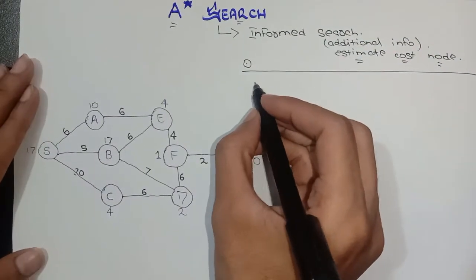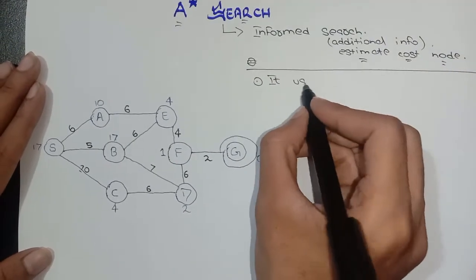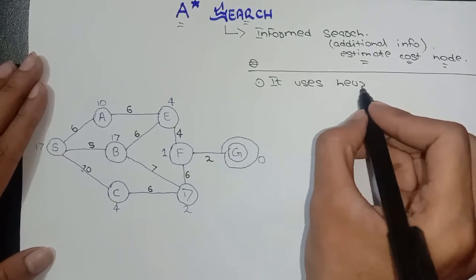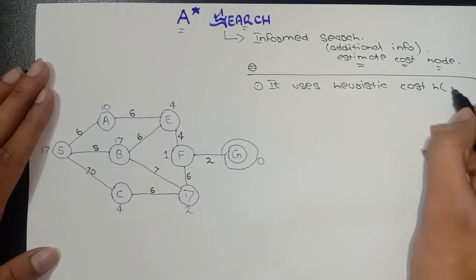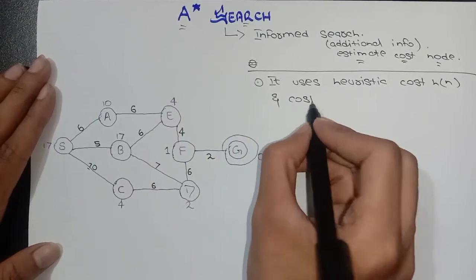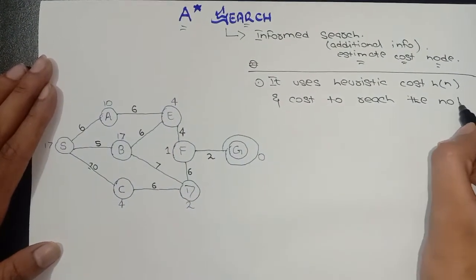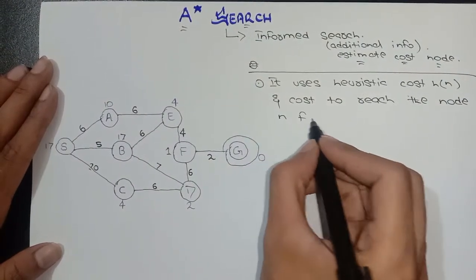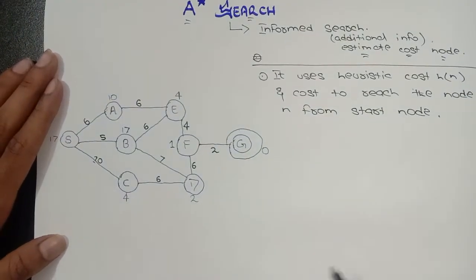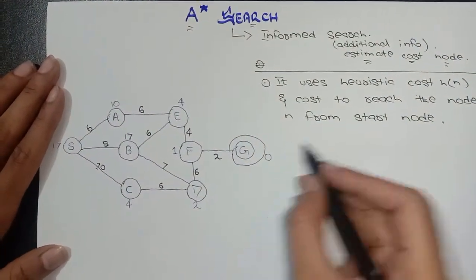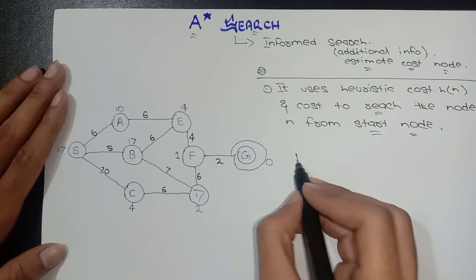So what is A* search? In A* search, it uses heuristic cost — h of n — and cost to reach the node n from the start node — g of n. This is a very important point: it uses heuristic cost and cost to reach the node n from the start node.